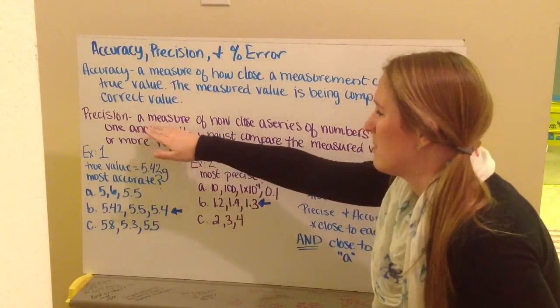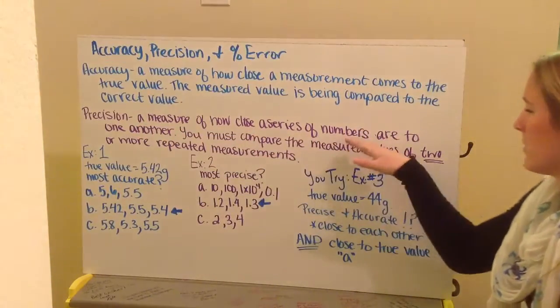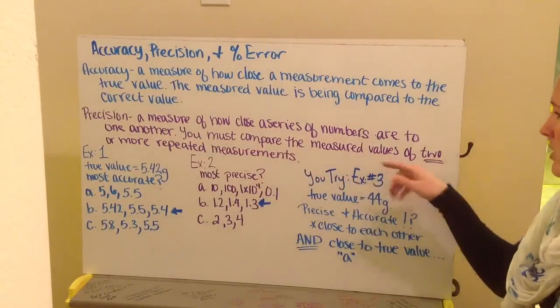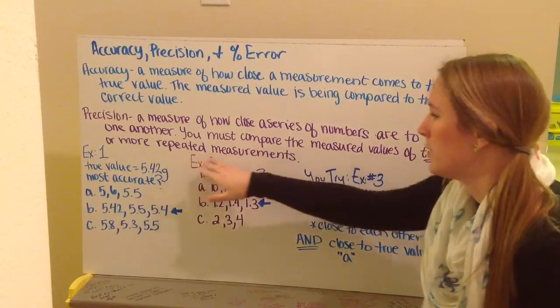Precision is a measure of how close the series of numbers are to one another, and you must compare the measured values of two or more repeated measurements.